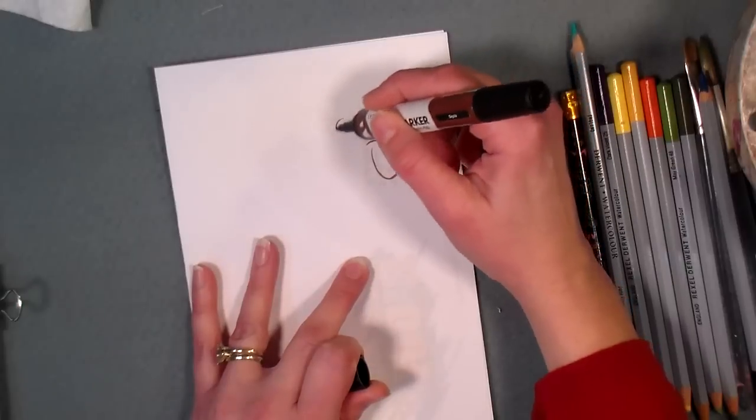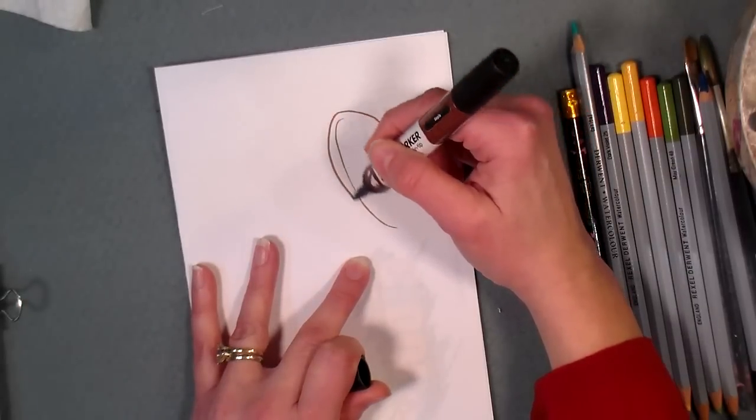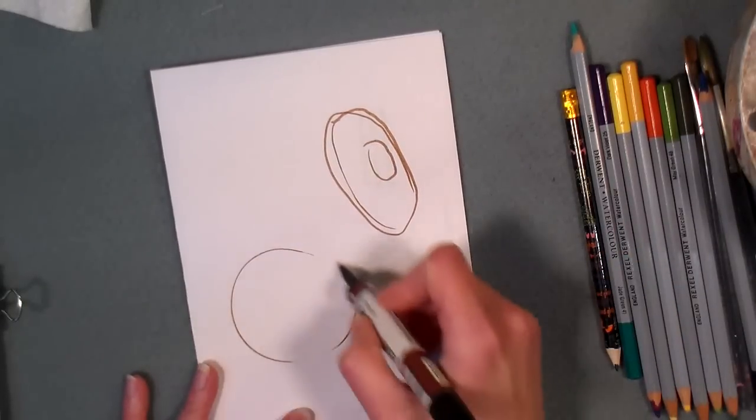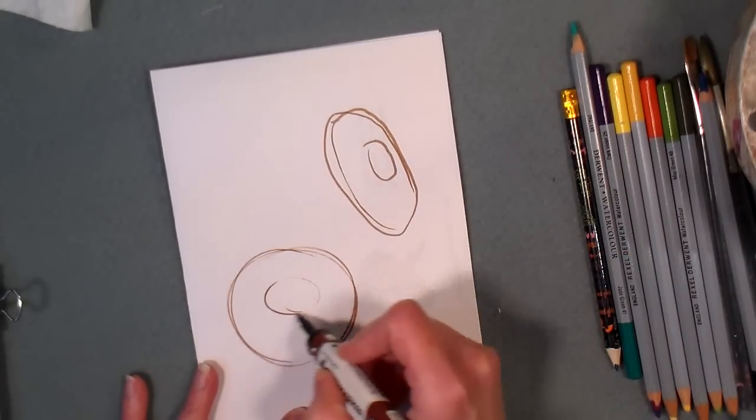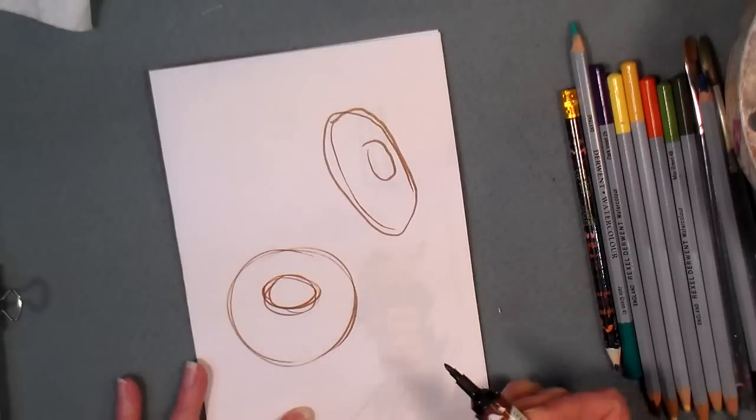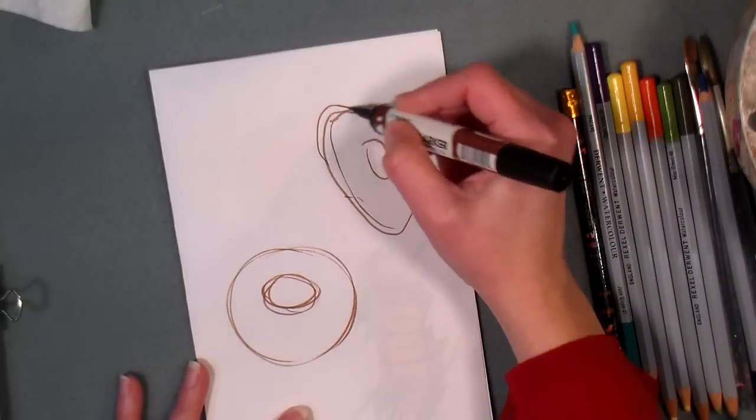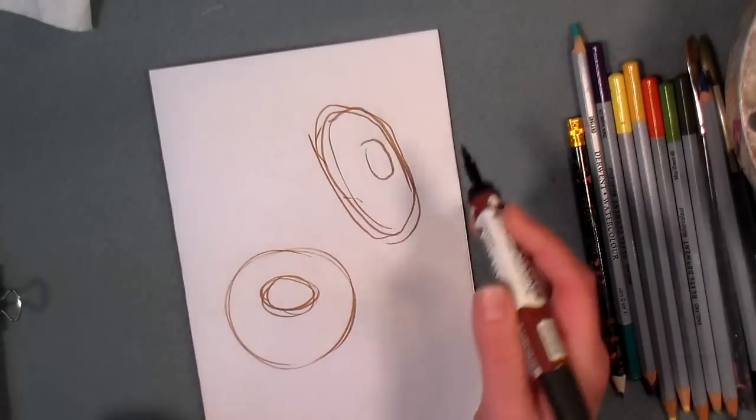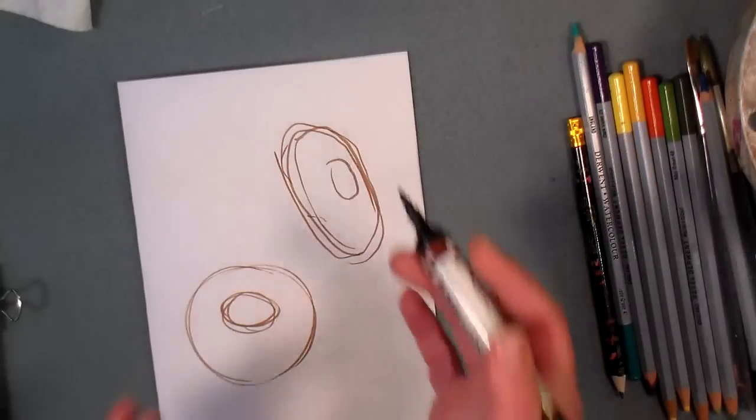I break the shape of the flower into easy simple shapes. And then I'm gonna do the same thing over here for the smaller flower. Of course I would be doing this with a pencil and having my lines much lighter.